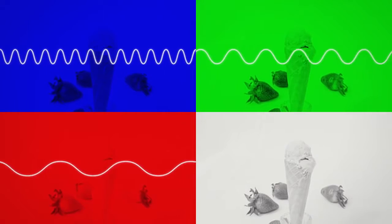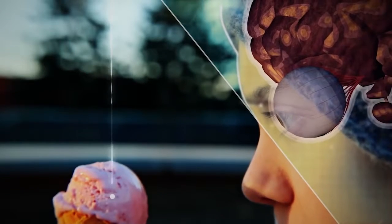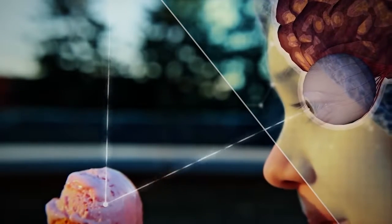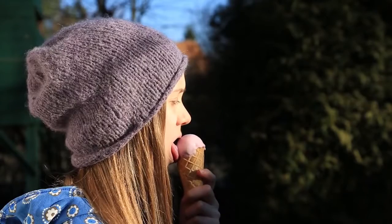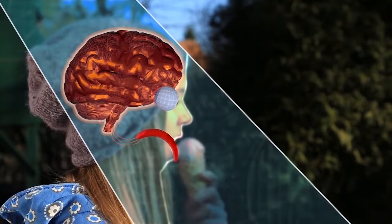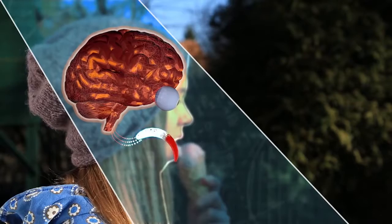Colors are just light waves with specific wavelengths. Light waves are affected by the ice cream, taken in by your eyes, and sent to your brain. Then comes the taste information from your tongue, happiness hormones are released.